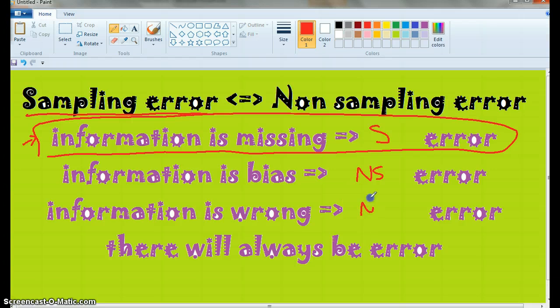Another form of non-sampling error is when it's wrong. That could be human error. They could hear wrong, they could type it wrong. People could lie.